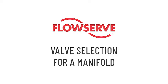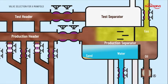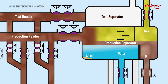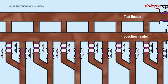Valve selection for a manifold. Offshore and onshore gathering systems convey fluids from the various wells in a field to a central location for separation and further processing.